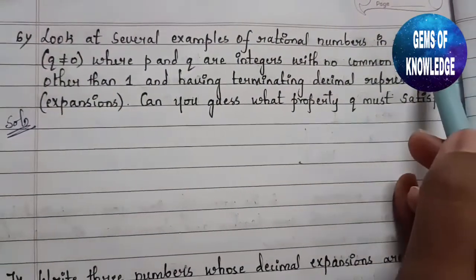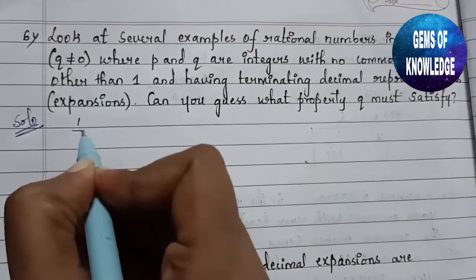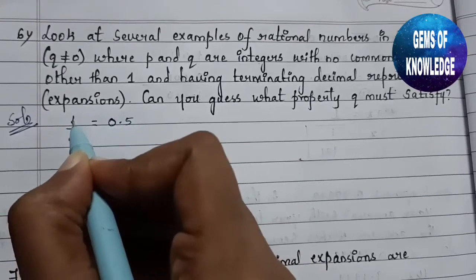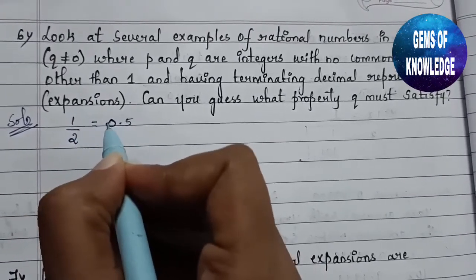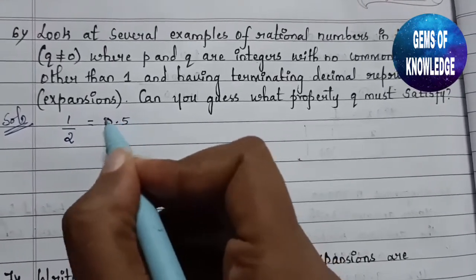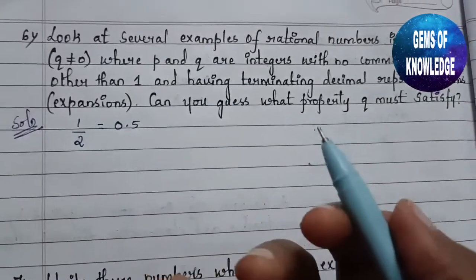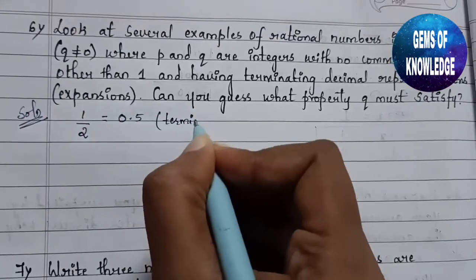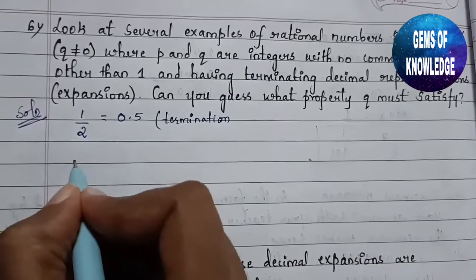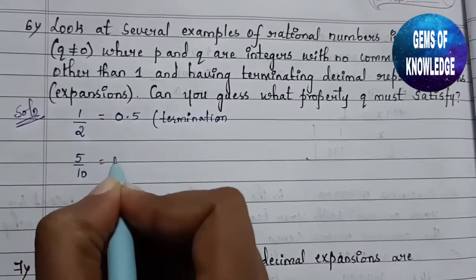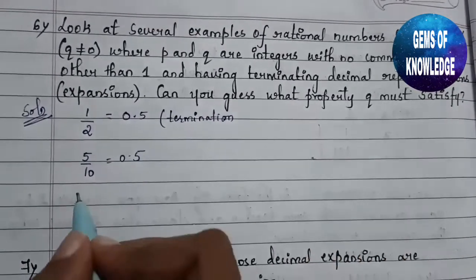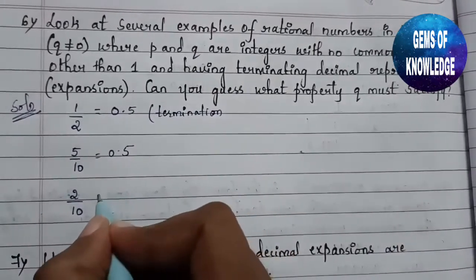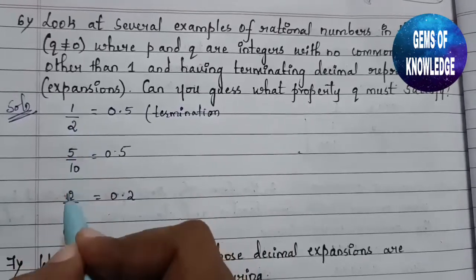Let us take p/q form rational numbers as examples. Take 1/2 — after dividing, we get 0.5, which is a terminating number. Similarly, take 5/10 — we also get 0.5. And 2/10 gives us 0.2. So wherever we have 1/2, 5/10, and 2/10, they all give terminating decimals.